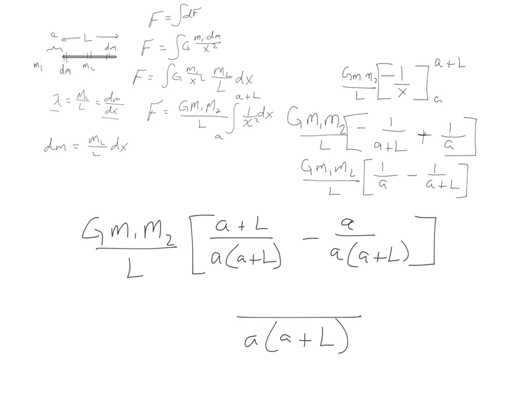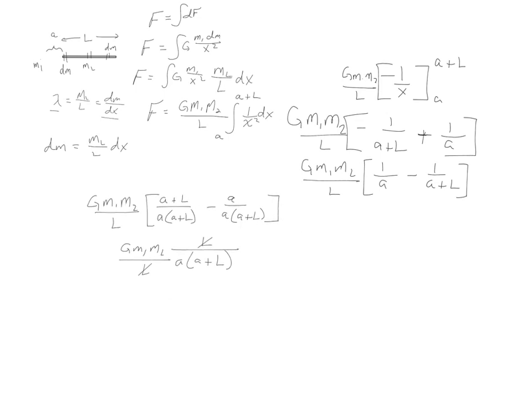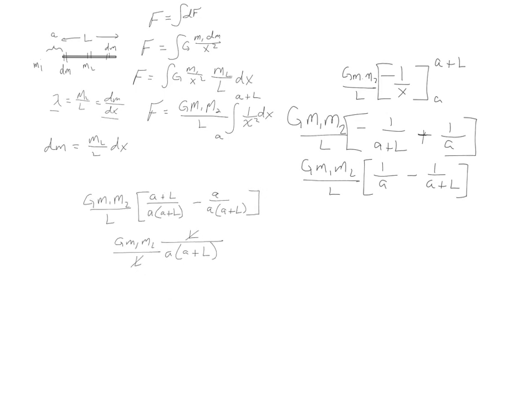So now we can combine the top. A minus a gives me L. And if we look at our constants here, this L cancels out that L. And we're left with G, m1, m2, all over a times a plus L. And that is the net force.